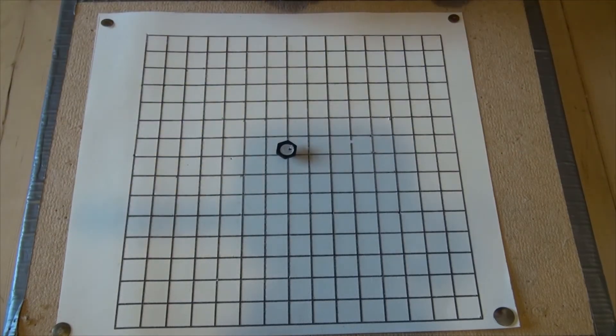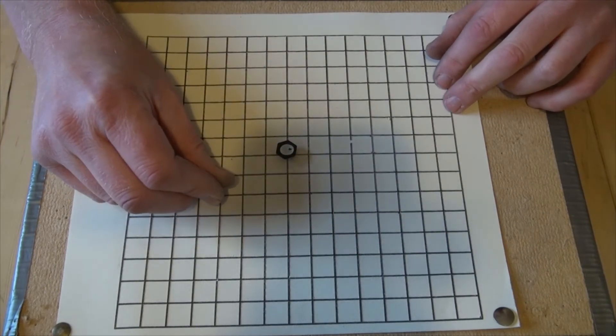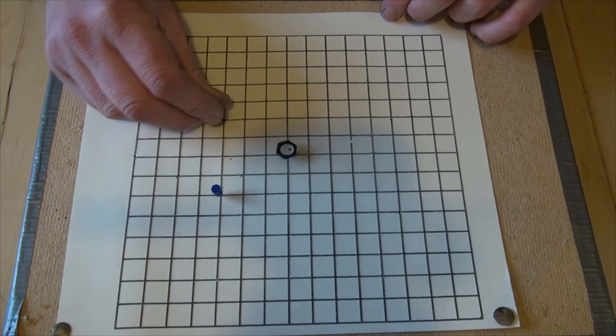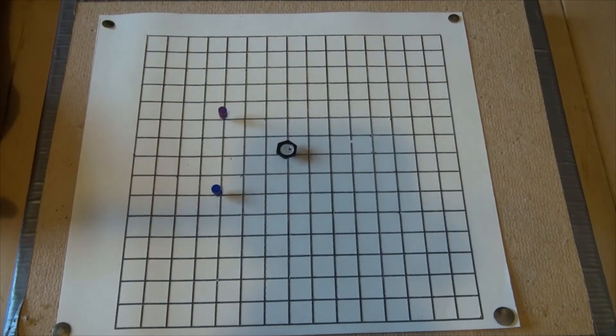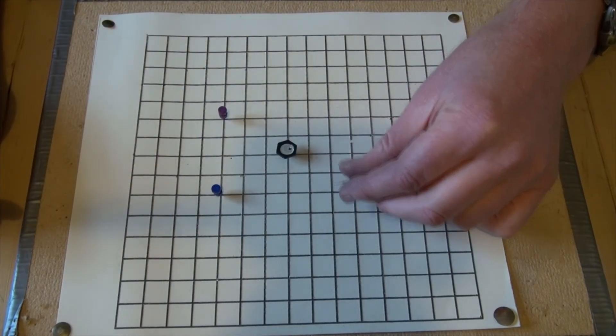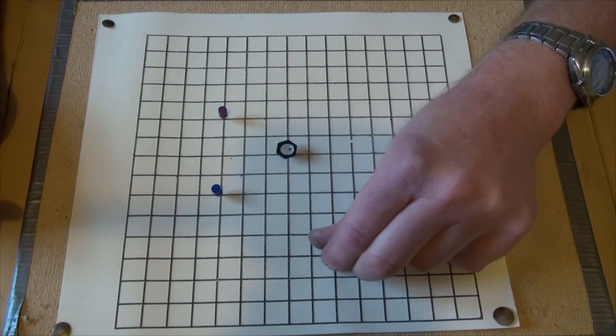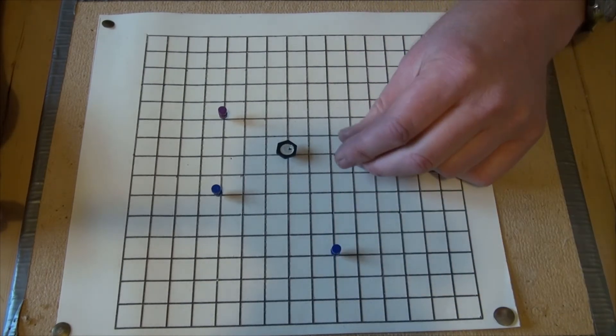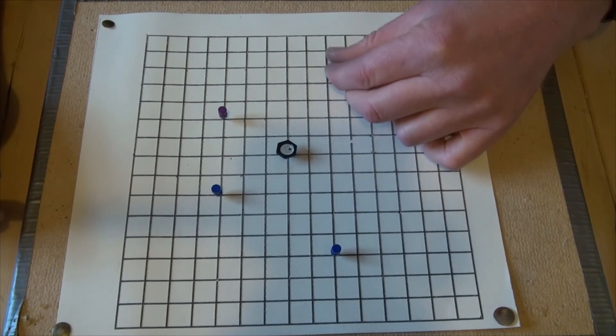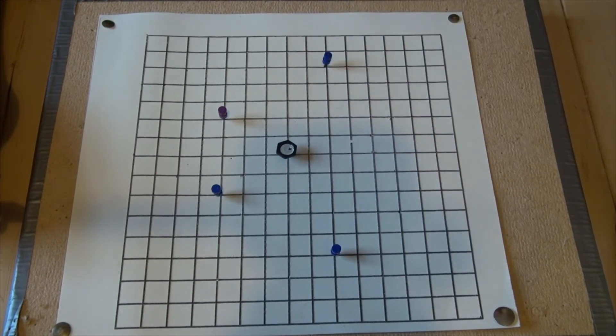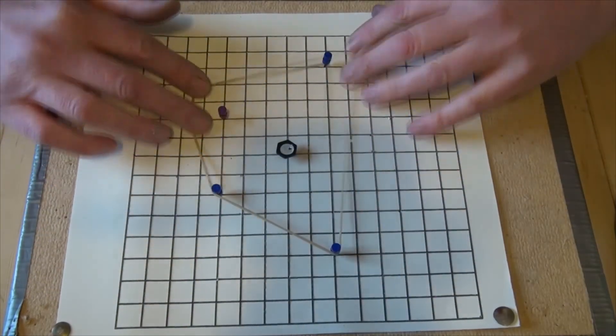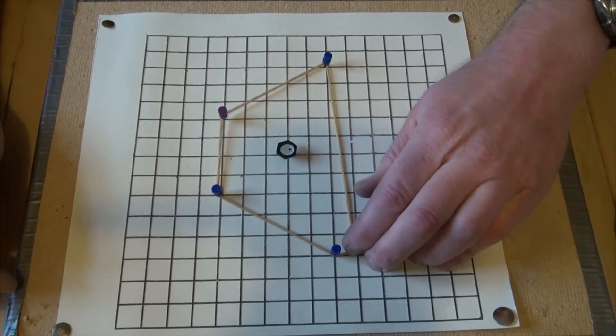And then you can plot coordinates in all 4 quadrants. 3, 2, 3, minus 2, minus 2, 5, and minus 2, minus 5. There you go. And you can turn that into a shape very quickly.